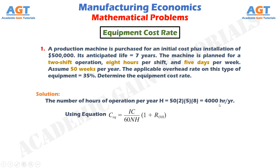Using the equation: C_EQ = IC / (60 × N × H) × (1 + R_OH). Where C_EQ represents equipment cost rate expressed in dollars per minute; IC represents initial cost of the equipment in dollars; N represents anticipated number of years of service; H represents annual number of hours of operation in hours per year; and R_OH represents the applicable overhead rate for the equipment expressed as a percentage.